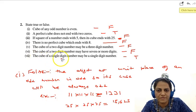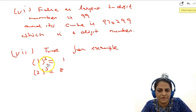The last one is the cube of a single-digit number may be a single-digit number. This is true. For example, 1 cube is 1, 2 cube is 8. So it is a single-digit number.